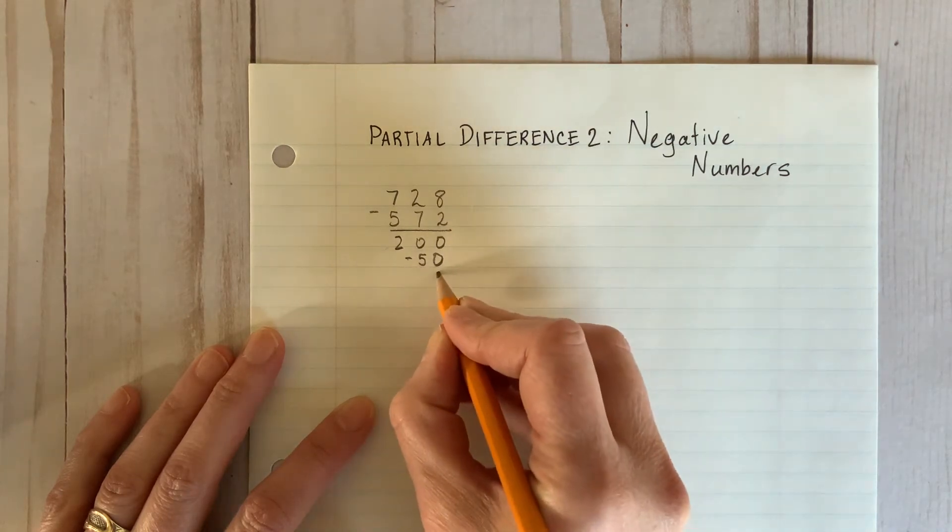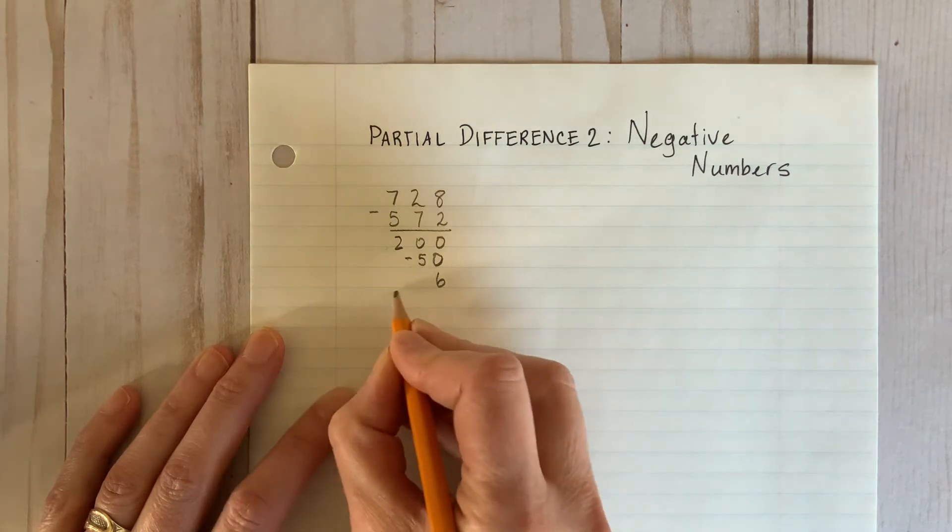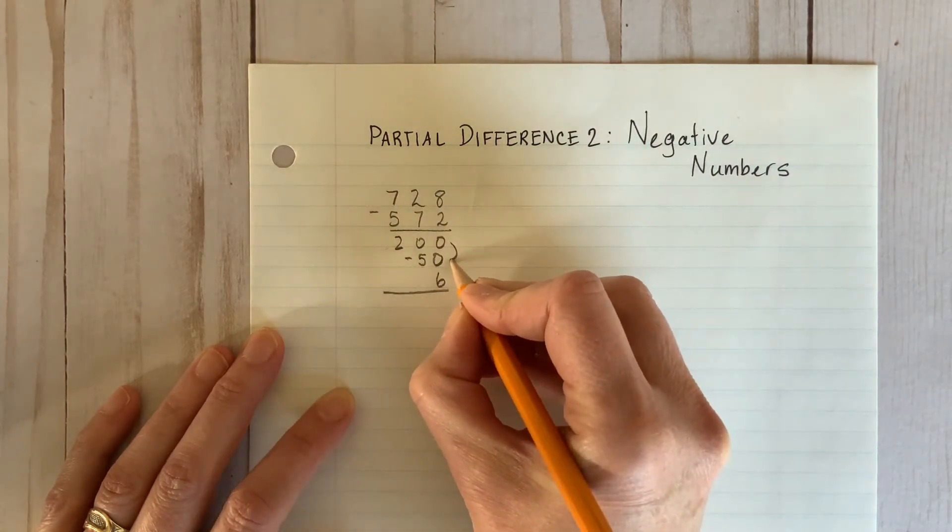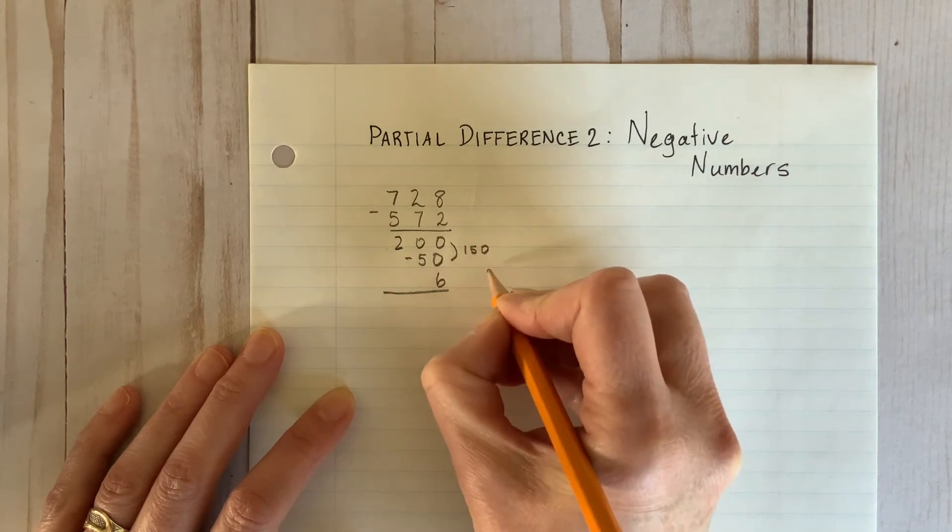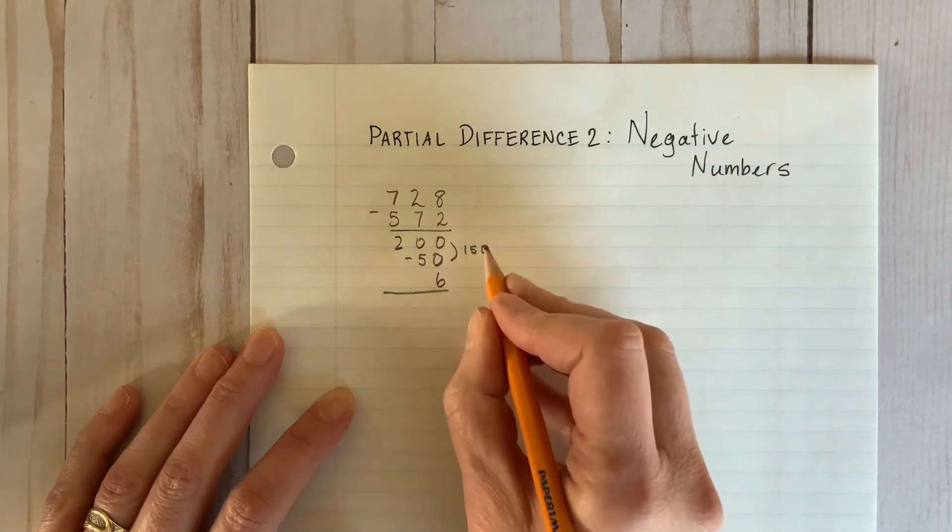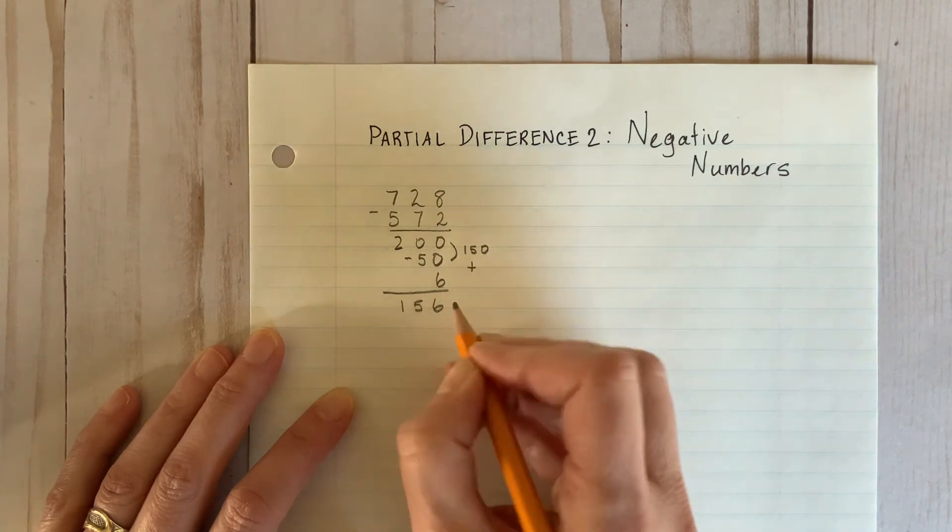After subtracting the final column, students total up the partial differences. 200 plus negative 50 is 150 plus 6 is 156.